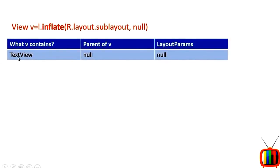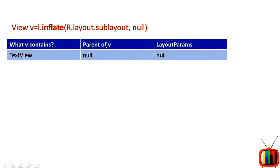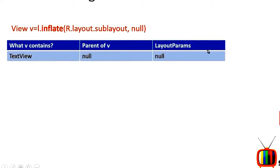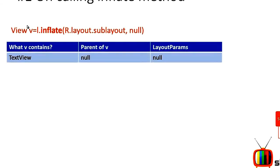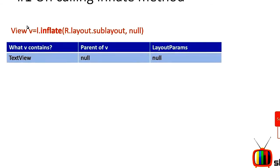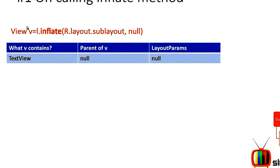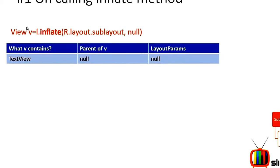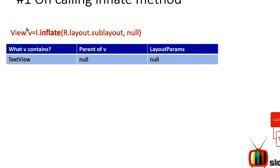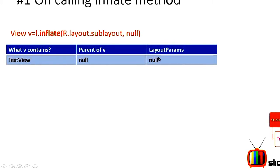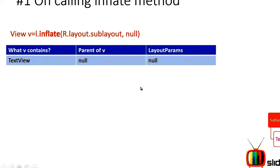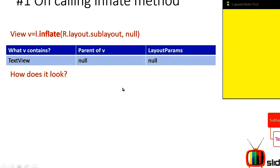At this point, V contains the TextView, since that's what you're inflating. The parent of V is null since we specified null. The layout params for V is also null. What does that mean? Layout params is an object that controls how big your view is, its appearance, orientation, etc. It differs for each layout — that's why you have LinearLayout.LayoutParams, RelativeLayout.LayoutParams, all derived from ViewGroup.LayoutParams as the base class.